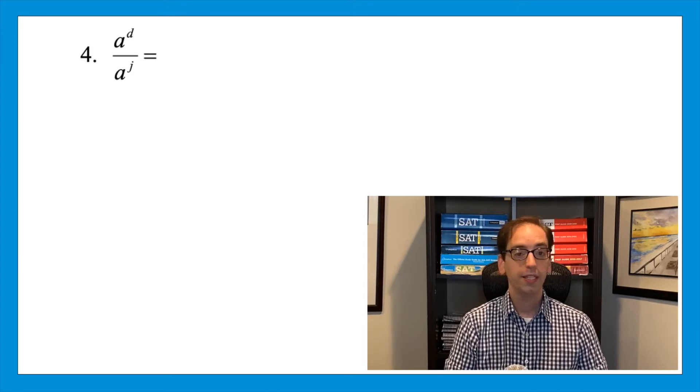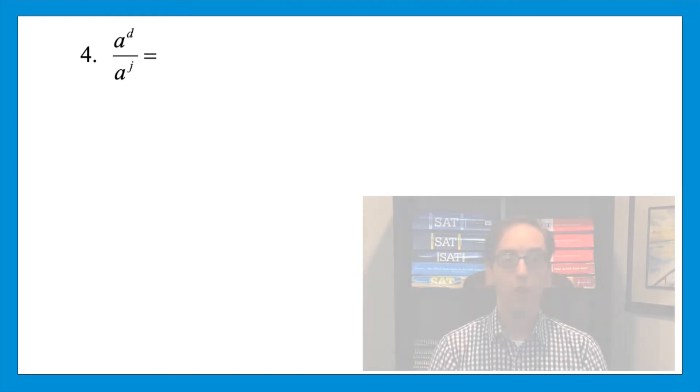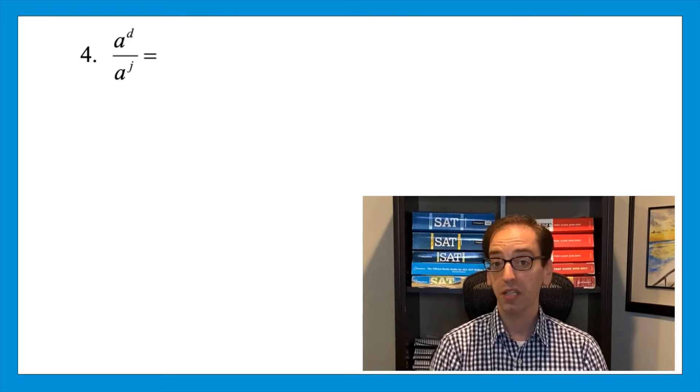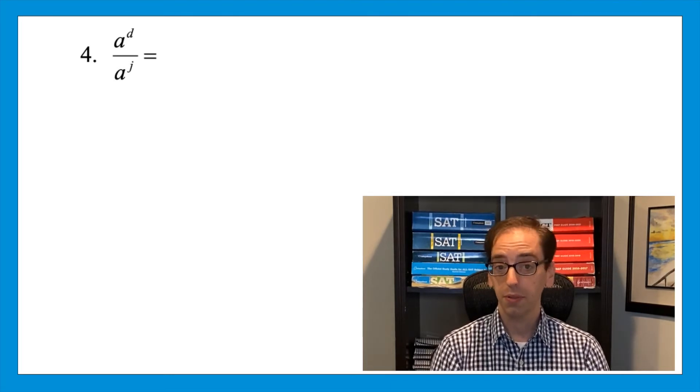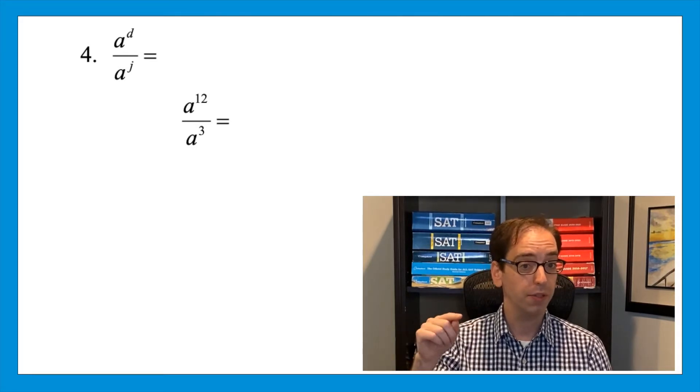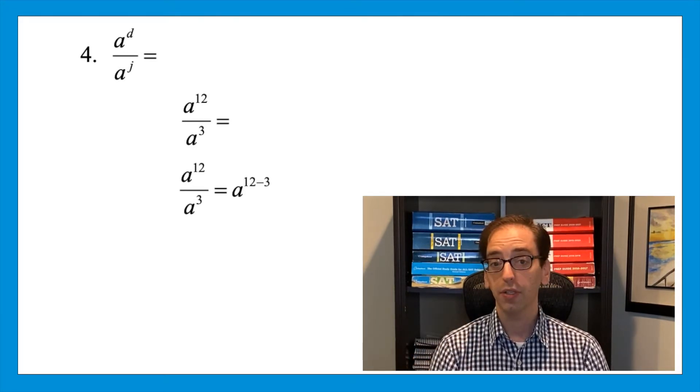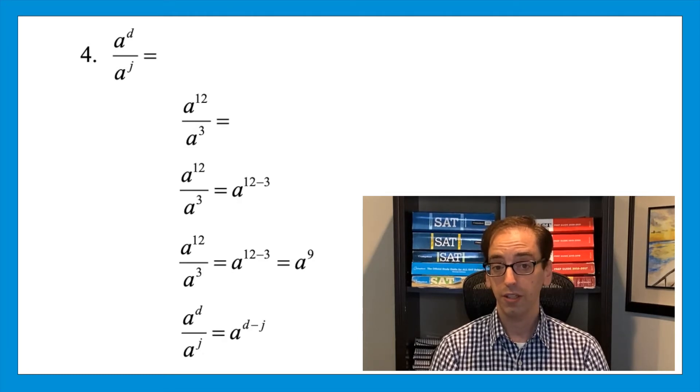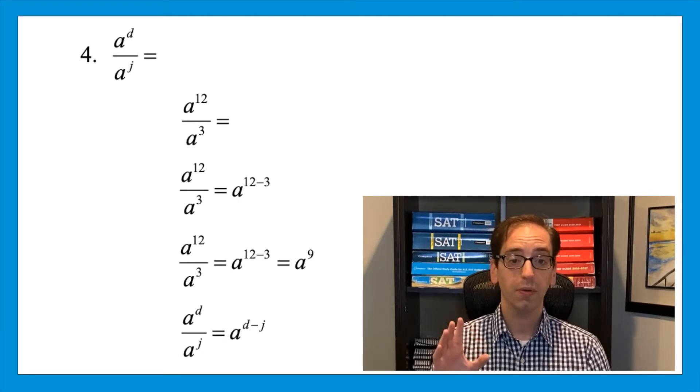Let's look at another variation. Question four. a to the d over a to the j equals what? Press pause and think about how you could rewrite this expression. You might look at this and think, well, we don't have any numbers, so what could we do? Well, you could pick numbers. Let's keep the numbers simple. Let's pretend instead this said a to the 12 over a to the 3. What would you do when dividing with powers? It means you subtract the powers. That would be a to the power of 12 minus 3. Rewriting that would become a to the 9. So let's apply that to the last question. a to the d over a to the j becomes a to the power of d minus j.